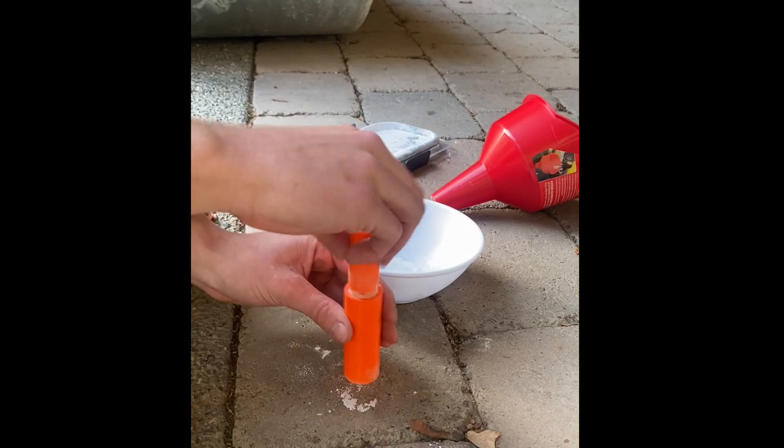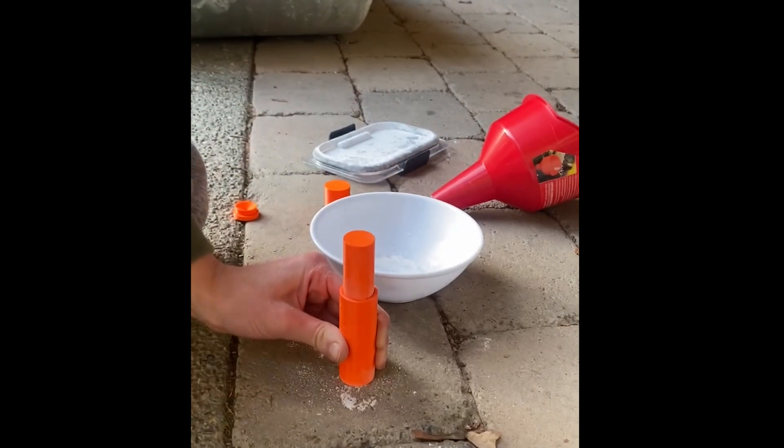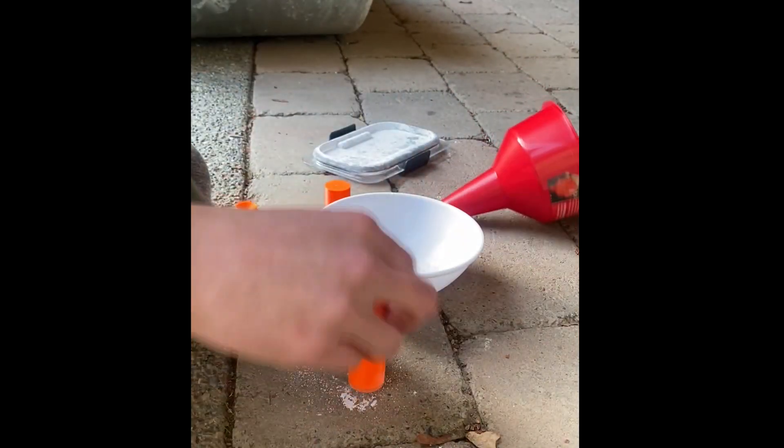You also want to use a rubber mallet for this, as to not damage your dowel too much. Now that the propellant is sufficiently packed, and we have around 50 grams of propellant, we can pull out the rod so that we have a nice hole through the center of the motor.